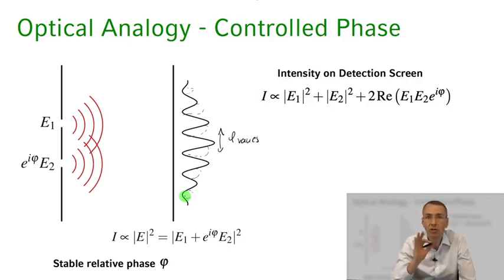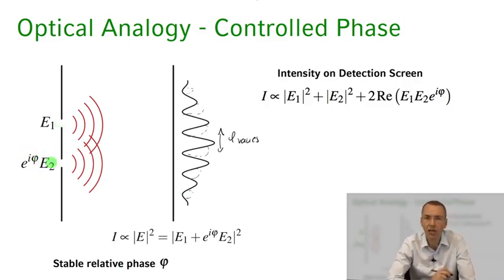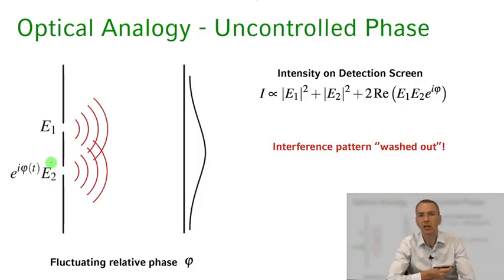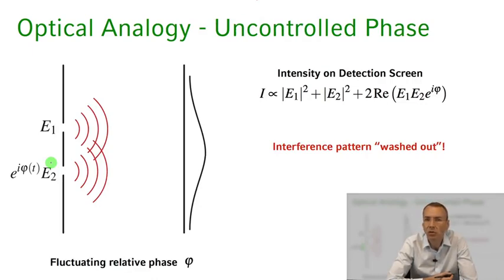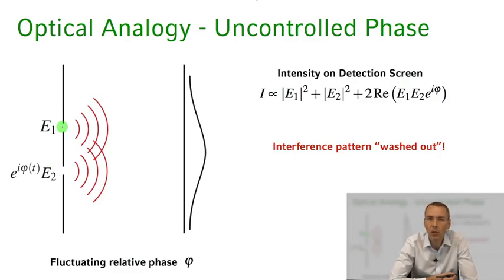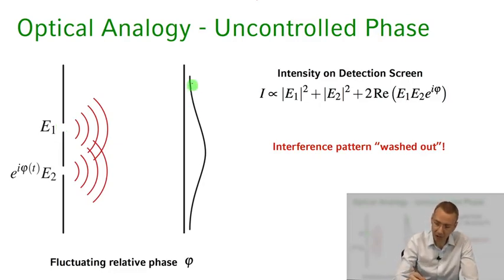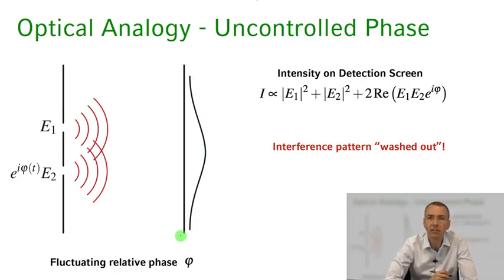It's really important in order to see a stable interference pattern that the phase is fixed between the two sources E1 and E2. If it's not under the control of the experimentalist — if it fluctuates violently — the interference pattern is going to wiggle up and down and on average wash out completely. What we'll see on the detector plane is a completely featureless pattern, just a shadow of those slits on the detection screen, with no interference pattern whatsoever.